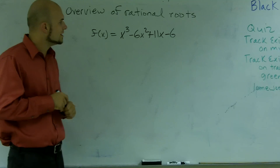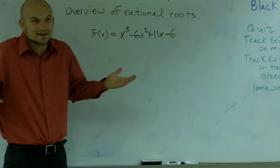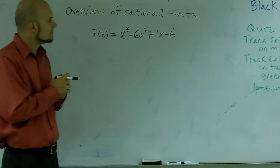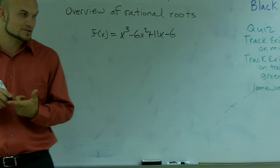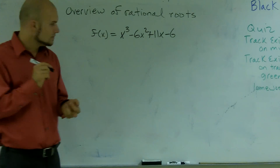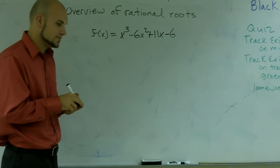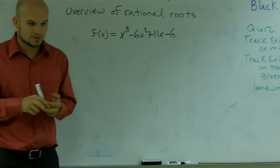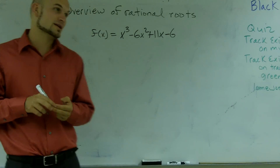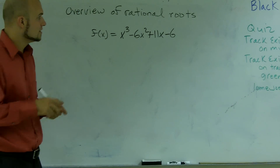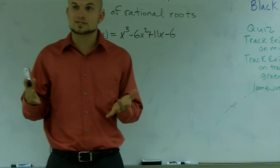So those are the things we cannot do. We can't use the quadratic formula because it's not a quadratic. We can't do completing the square. So we're kind of stuck — we need to somehow figure out how we're going to find the zeros. Well, there's one other test we can use, which is called the Rational Zero Test.